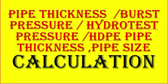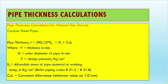The first page shows the calculation for natural gas service. For carbon steel pipe in natural gas service, the pipe thickness calculation formula is: T = PD / (2 × SA) + B + C. Here, T is thickness in millimeters, D is outer diameter in millimeters, P is design pressure in kg/cm², SA is allowable stress of pipe material at working temperature in kg/cm², B is the piping code correction (ASME B31.3 or B31.8), and C is the corrosion allowance with a minimum value of 1.0 mm.